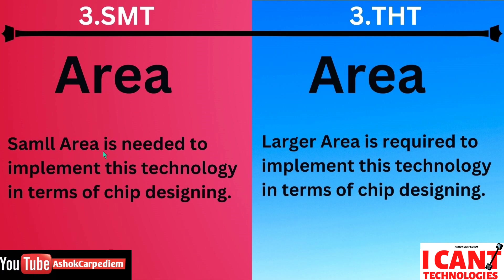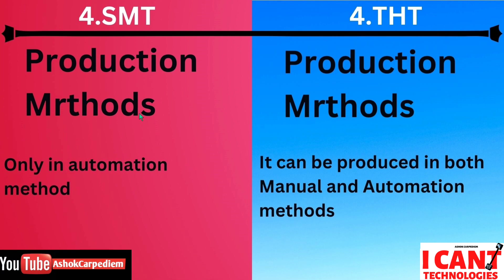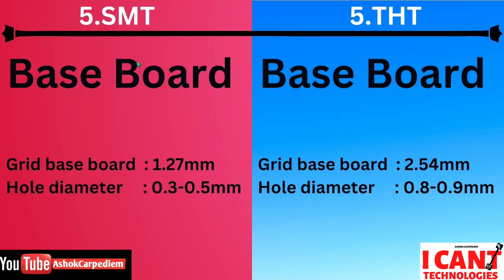The third point is the area. For SMT, a small area is needed because no holes are needed and you cannot solder manually — it is an upgraded technology, that's why small area is needed. For THT, we need a large area. In terms of production methods, SMT can only be made using automation, but THT can be produced using both automation and manual methods. The baseboard sizes, grid board, and hole diameter differences are also shown here.